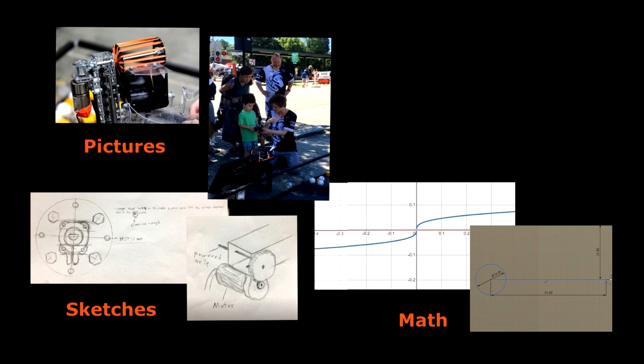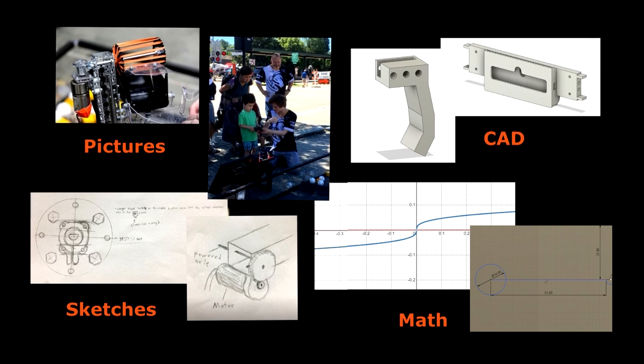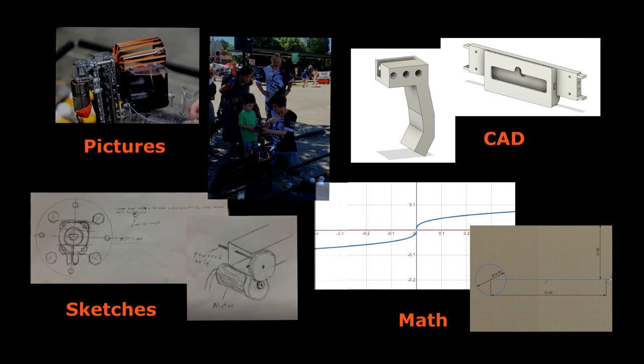You should have math for both your engineering and your programming. Some common engineering calculations you could include are gear ratios, and any measurements that you do to plan the layout of your robot. If your team does CAD, you should include your CAD. CAD is like sketches in that it shows you planned out your robot before you built it.